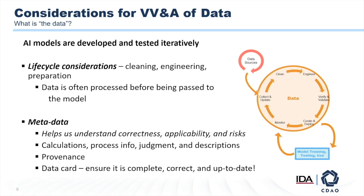Now, in order to conduct V&V, you may actually need some things beyond the data itself. So you need to be thinking about collecting things like the calculations — what kind of calculations are you performing to manipulate the data? What types of judgment calls might have been made? Maybe you have somebody sitting in an office who is removing outliers from the data. What are the criteria used to remove those outliers? Is this somebody's professional military judgment? We see this sometimes — somebody sits in an office and uses their professional military judgment to determine whether or not this data looks right and is appropriate and whether we need to trim things.